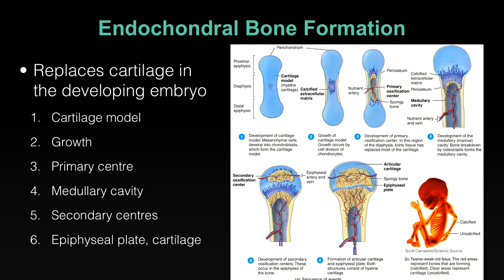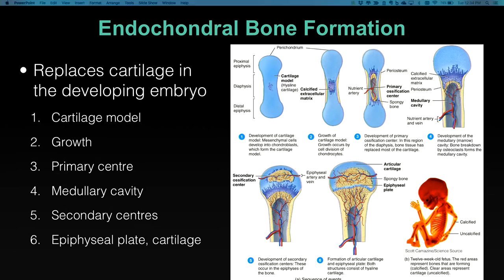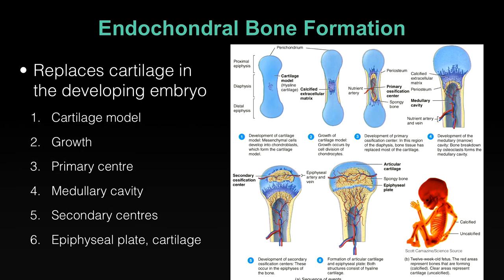Growth and calcification proceeds outward, but there's a large hollow area in the middle — the medullary cavity where marrow sits. As the template grows, bone is resorbed inside. The main portion of bone forms through central ossification and growth outward as the cavity hollows out. This is the diaphysis, and the primary ossification center is responsible for forming it.